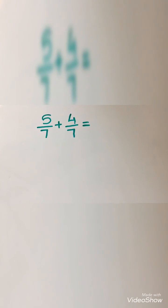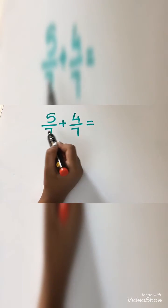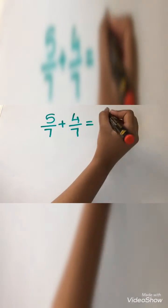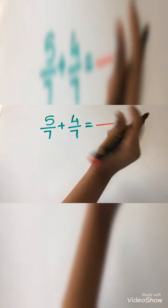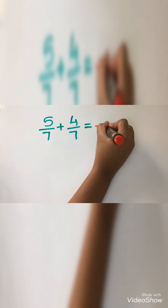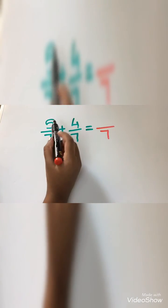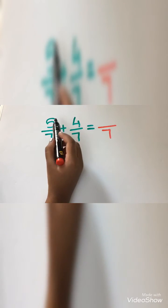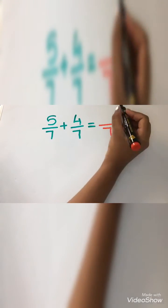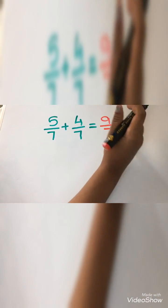And now I am going to tell you what to do when both denominators are the same. We should keep the denominator as it is. So I am going to put 7. Now we should add the numerators. So 5 plus 4 equals 9. The answer is 9 by 7.